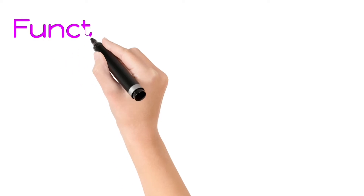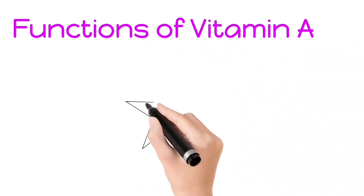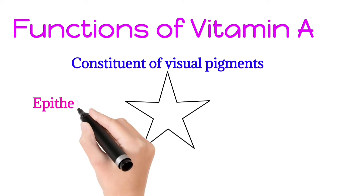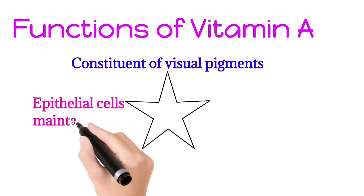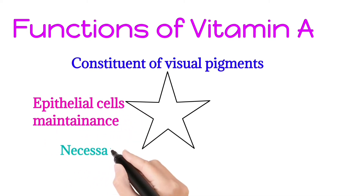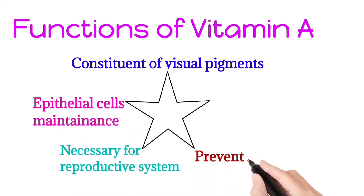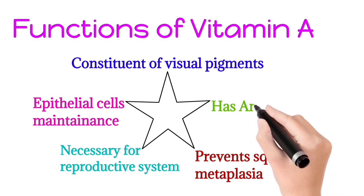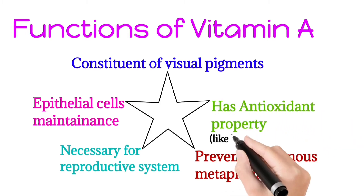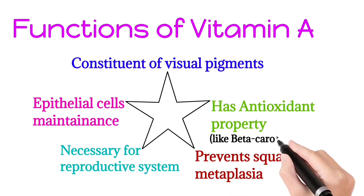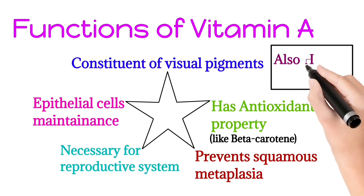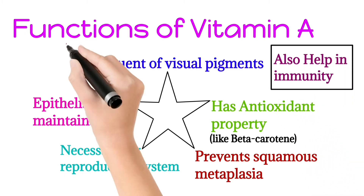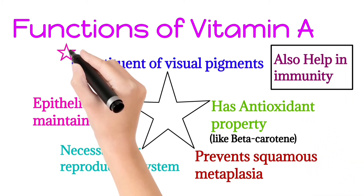Functions of Vitamin A include: being a constituent of visual pigments, epithelial cell maintenance, necessity for the reproductive system, prevention of squamous metaplasia, antioxidant properties (like beta-carotene), and aiding immunity.